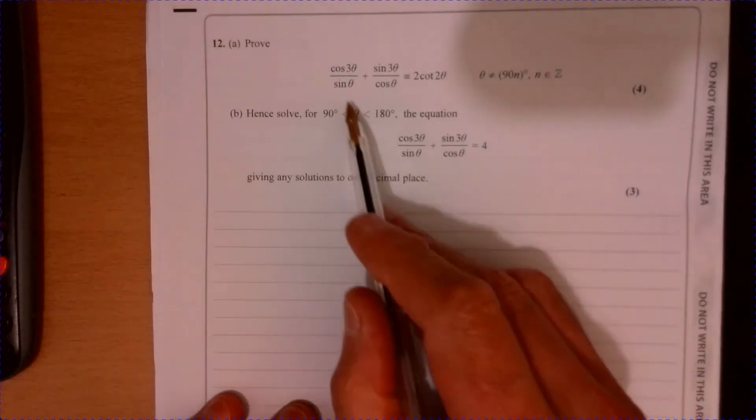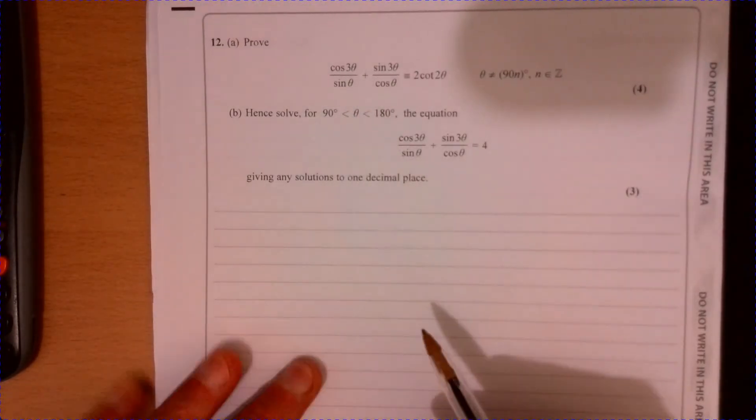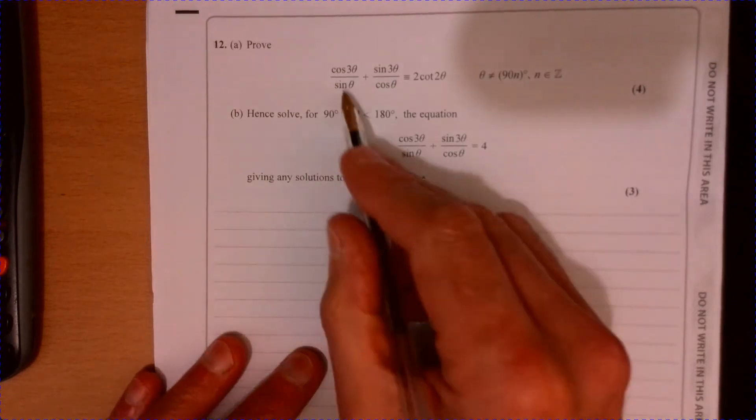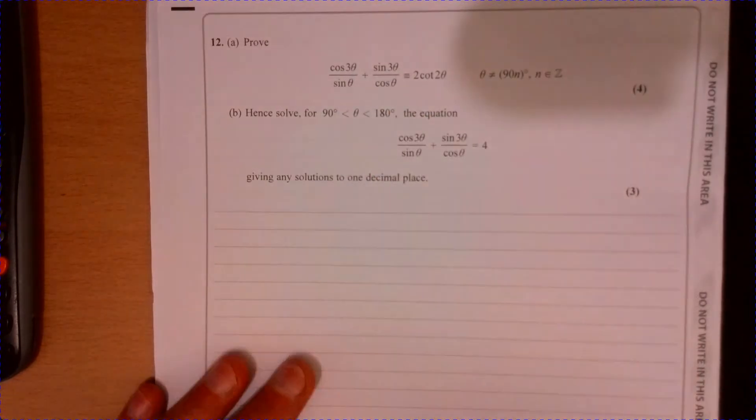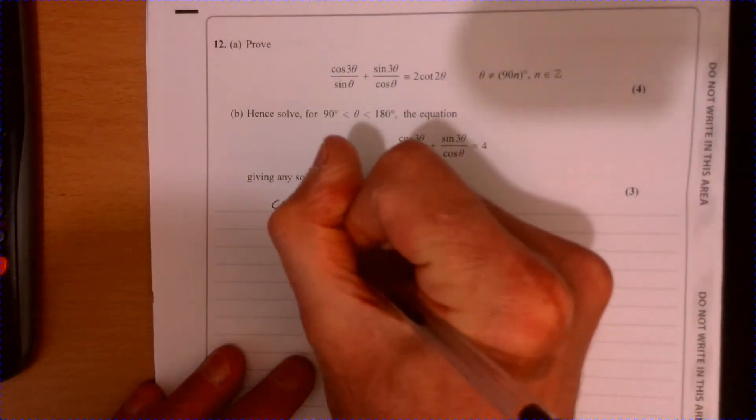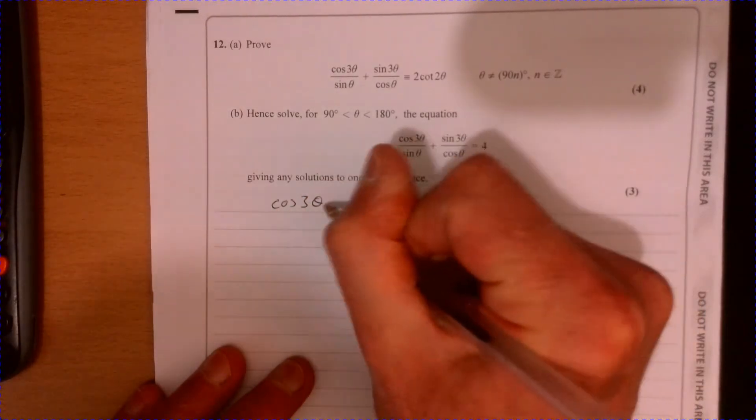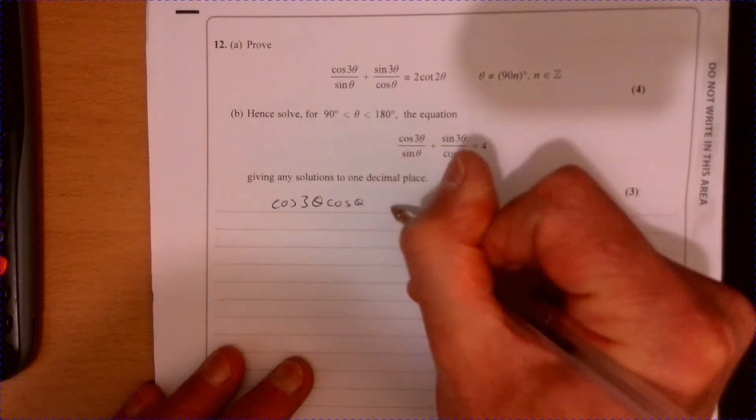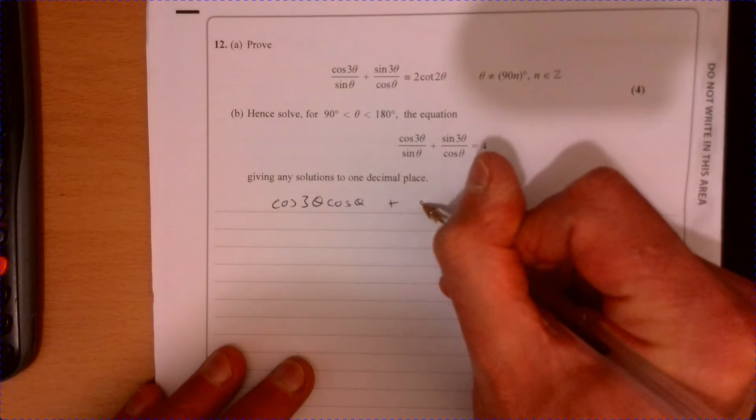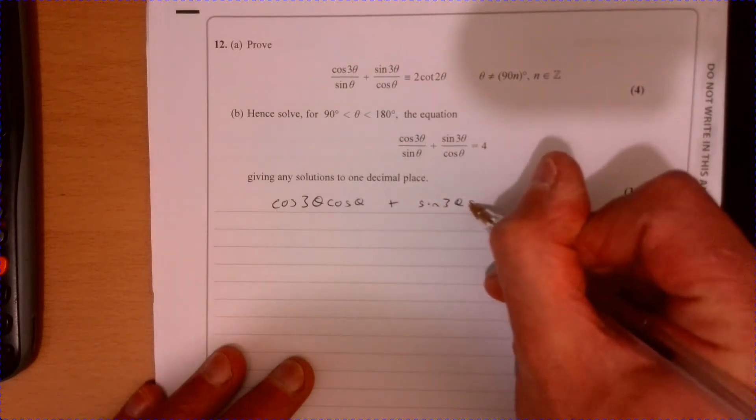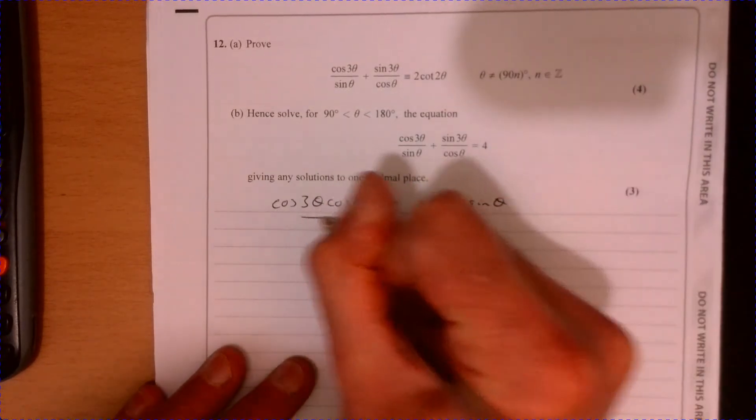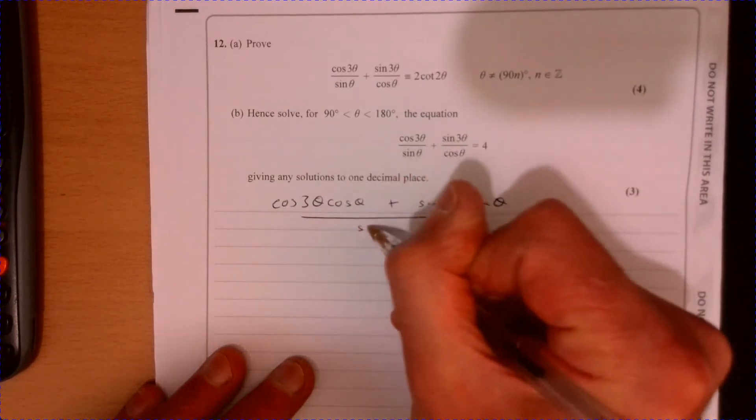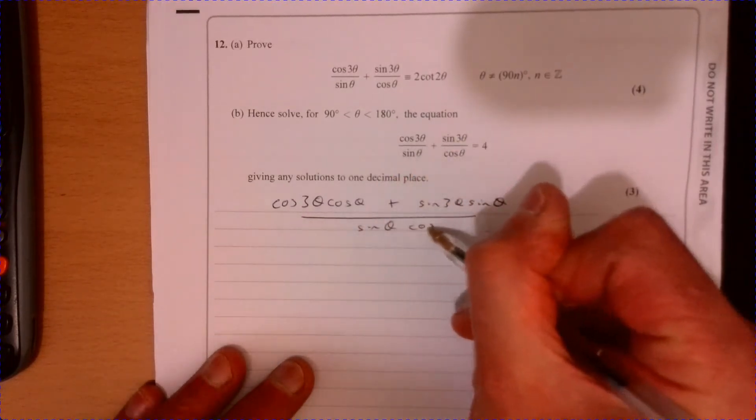Question 12, so let's start off by just making this one fraction. Multiply this side by cos, multiply this side by sine. That's going to give us cos 3θ cos θ plus sine 3θ sine θ, and all of that is over sine θ cos θ.